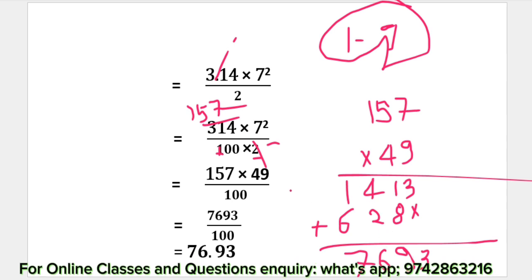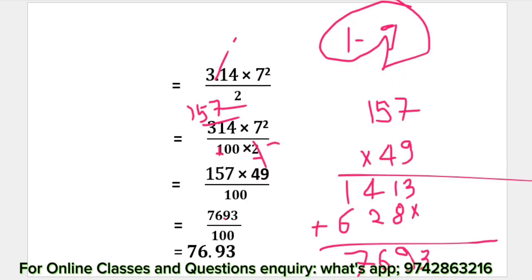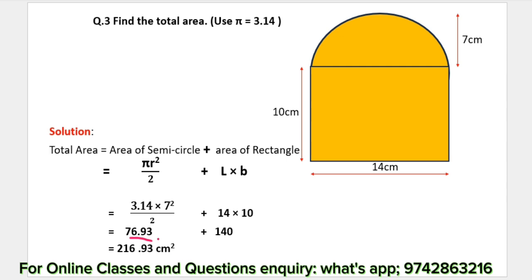5.7 into 4.9 equals 7.693. We divide this by 100 — we divide this to 2 decimal places. We divide this: 24.9, divide by 1, giving 12.9.